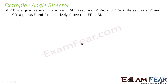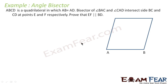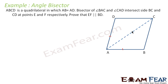Let's draw the quadrilateral ABCD. In this quadrilateral ABCD, we are told that AB is equal to AD — that is, this side is equal to this side. Now, the bisectors of angle BAC and angle CAD — so let's join AC so that we get angles BAC and CAD, and then we will draw the bisectors.